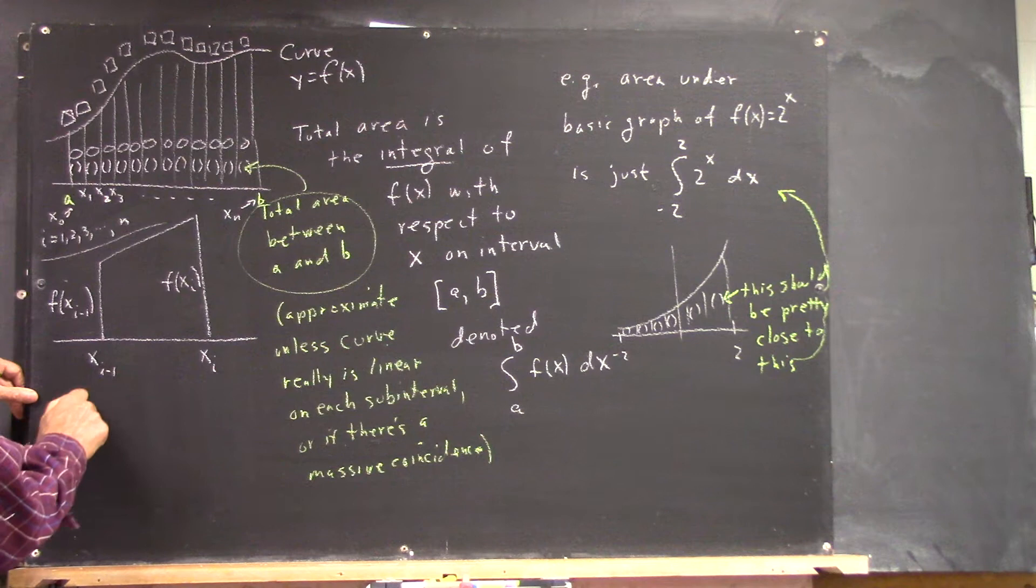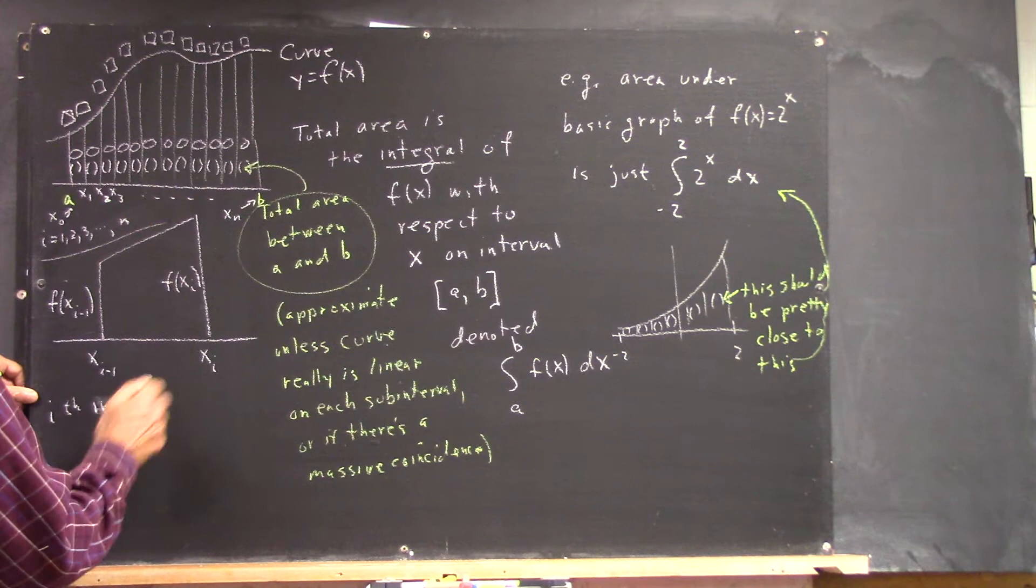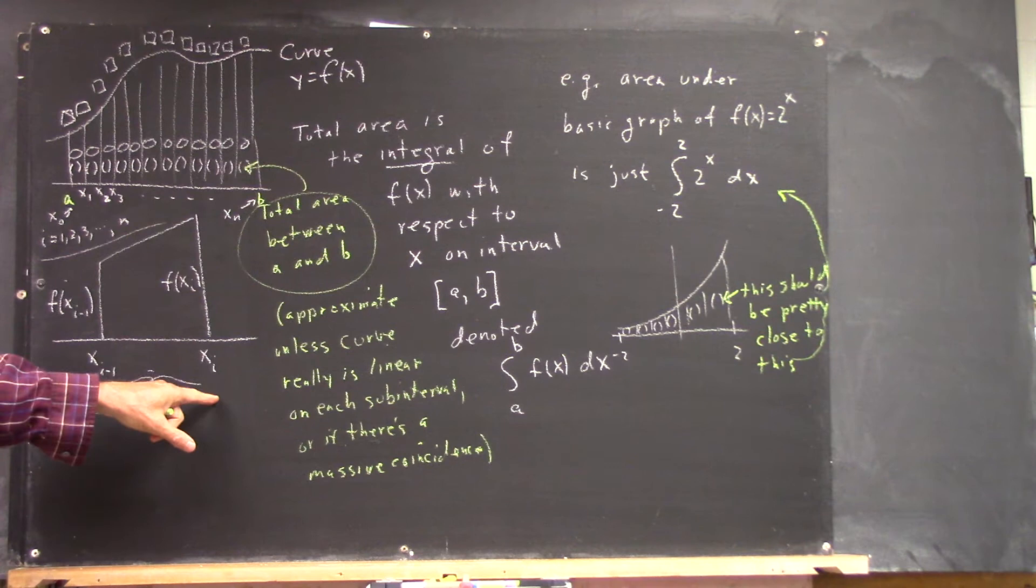Okay, then the i-th interval, so that interval goes from x sub i minus 1 to x sub i.